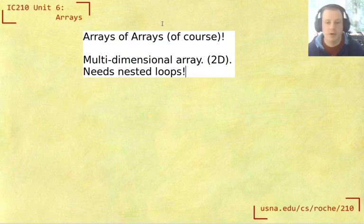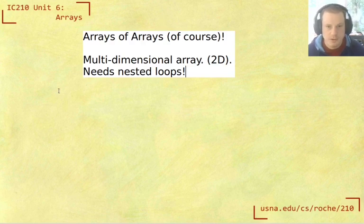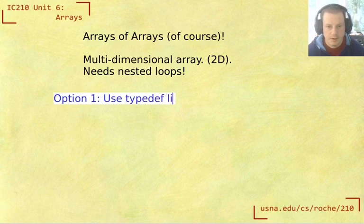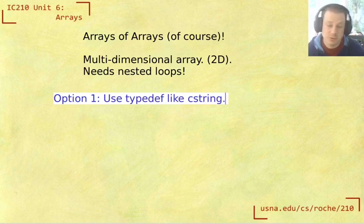But we also are going to have to do allocation in a different way. So we can do things like, so I'll say option one, use a typedef like cstring. So what we just made in the previous video was an array of strings, and each one of those C strings is really an array of chars. So that works.